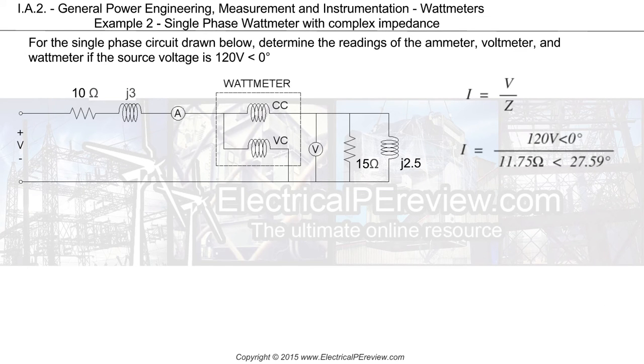Now we'll plug this into our formula and solve for the current. We take our source voltage given in the problem statement and divide it by our total circuit equivalent impedance.